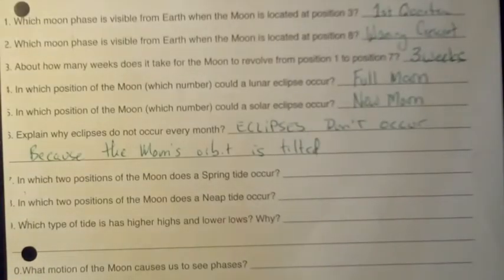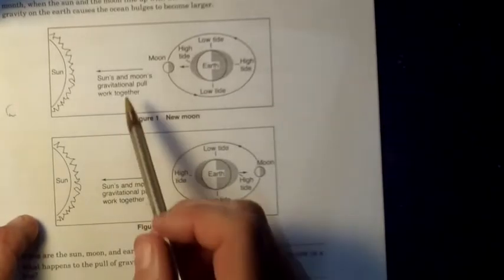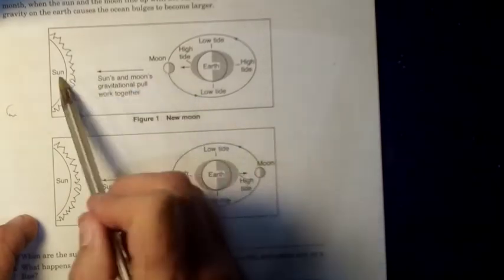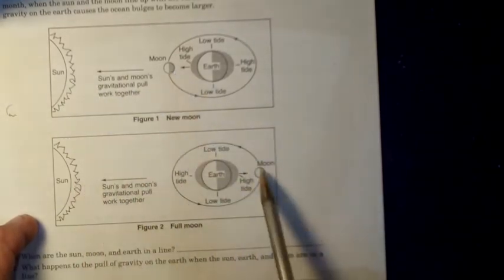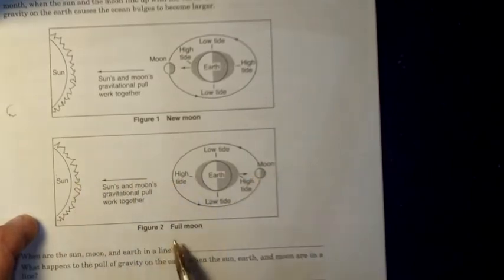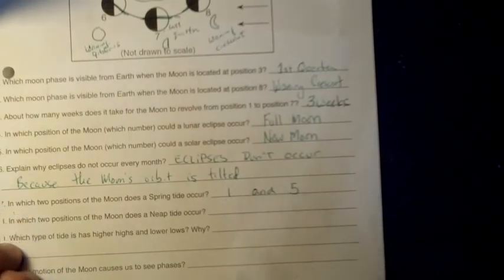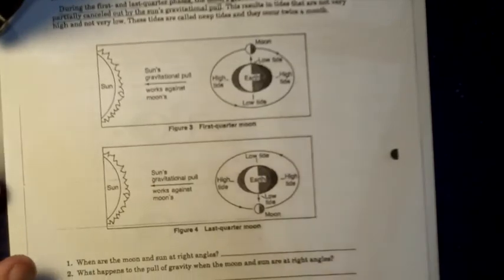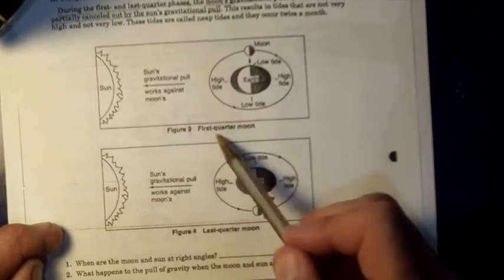Number seven, in which two positions of the moon does a spring tide occur? Spring tides occur when the sun and moon's gravitational pull work together. That's going to happen when the moon and sun line up during a new moon, or when the moon and the sun are on opposite sides of the earth during a full moon. One and five for the new and full moon. In which two positions of the moon does a neap tide occur? A neap tide occurs when the moon and sun are aligned at a 90 degree angle. This occurs during the first quarter moon and the last quarter moon.